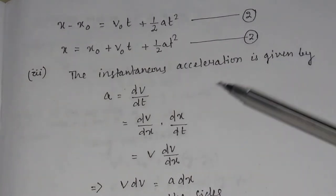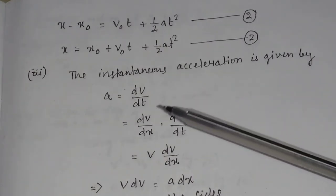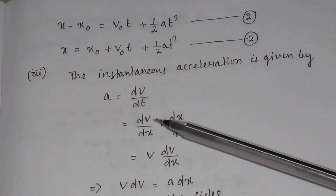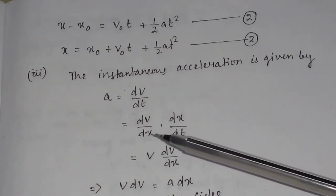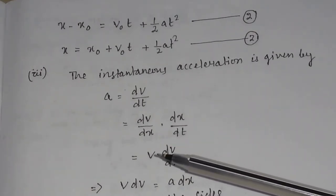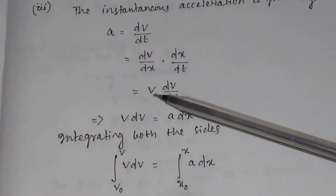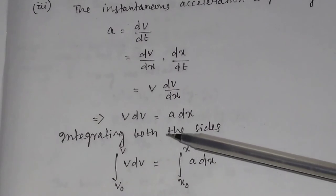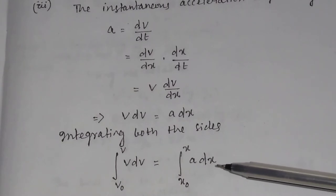Now let us deduce the third equation of motion. The instantaneous acceleration is given by A equal to dV by dt. Here V is a function of t, but if we write V as a function of x and x as a function of t, this becomes dV/dx into dx/dt. Since dx/dt equals V, this equals V into dV/dx. So V dV equals A dx. Integrating both sides: integration of V dV equals integration of A dx.